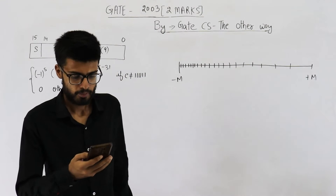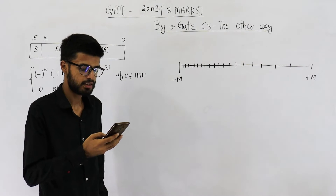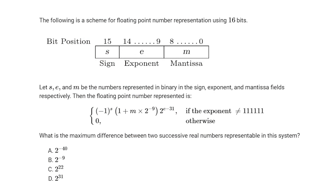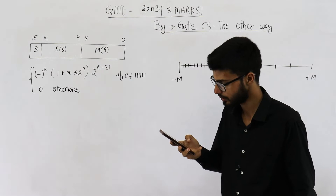The following is a scheme for floating point number representation using 16 bits. The first bit is for sign, then we have some bits for exponent, and then there are some bits for mantissa. Let s, e, and m be the numbers represented in binary in the sign, exponent, and mantissa fields respectively. Then the floating point number represented is given by a formula. They are asking: what is the maximum difference between two successive real numbers representable in this system?